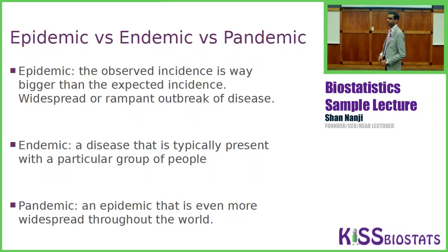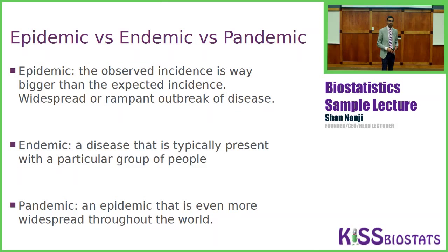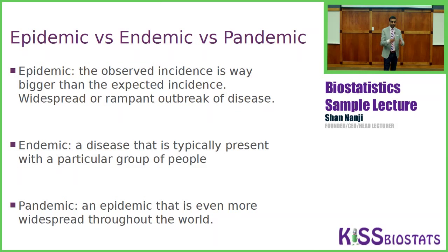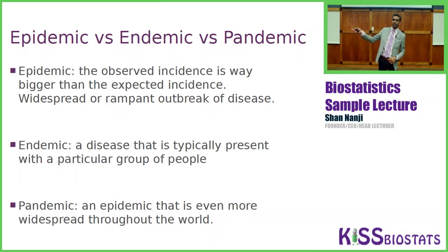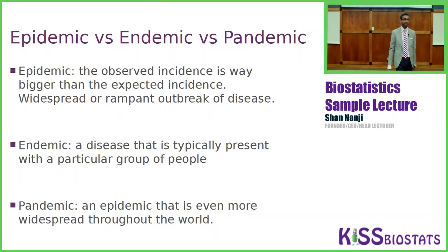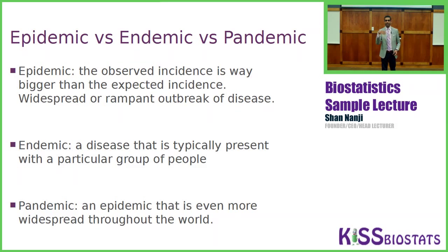Epidemic versus endemic versus pandemic. An epidemic is when the observed incidence is way bigger than the expected incidence — a widespread or rampant outbreak of the disease, like a bad virus killing everyone in the United States. Endemic is a disease that is typically present with a particular group of people — for example, kuru is a prion disease that only cannibals get from eating dead people's brains on a remote island. A pandemic is like an epidemic but even more widespread — throughout the entire world.